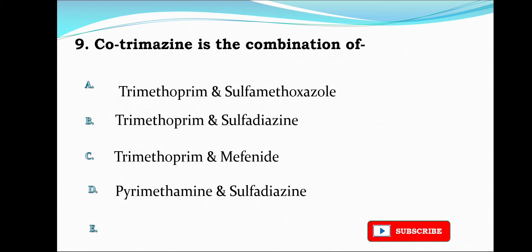Next question: Cotrimazine is the combination of trimethoprim plus sulfamethoxazole, trimethoprim plus sulfadiazine, trimethoprim and mefenide, or pyrimethamine and sulfadiazine. The correct answer is option A, that is trimethoprim and sulfamethoxazole.